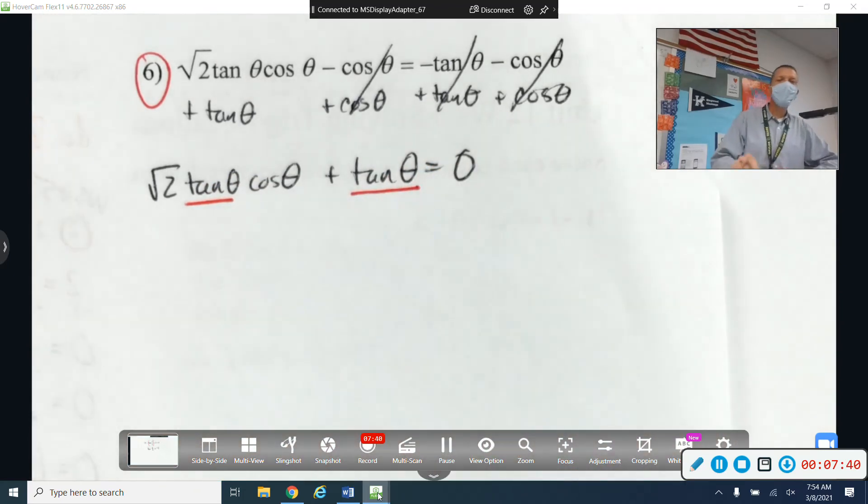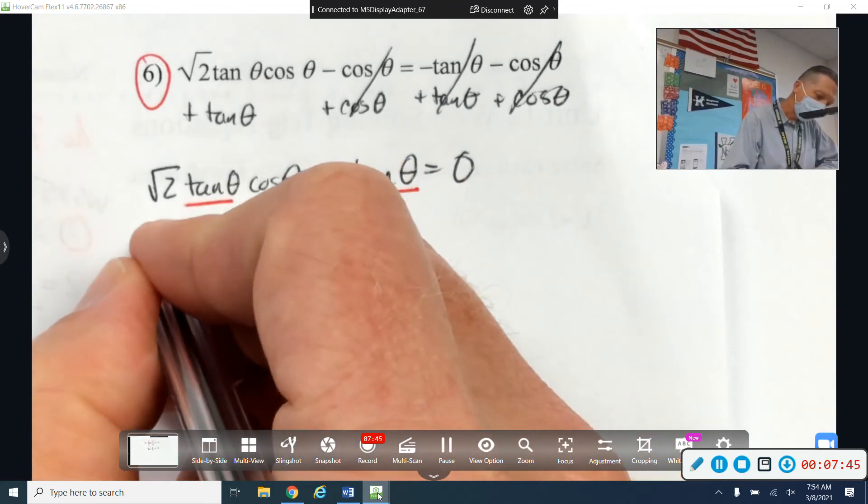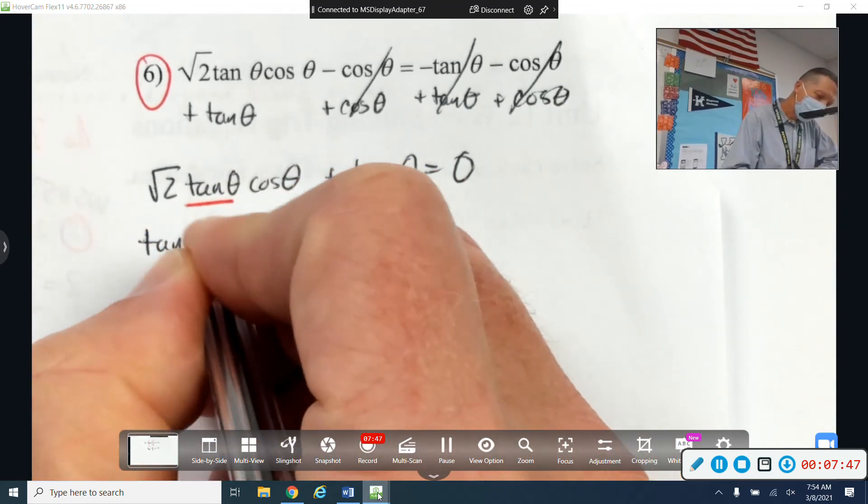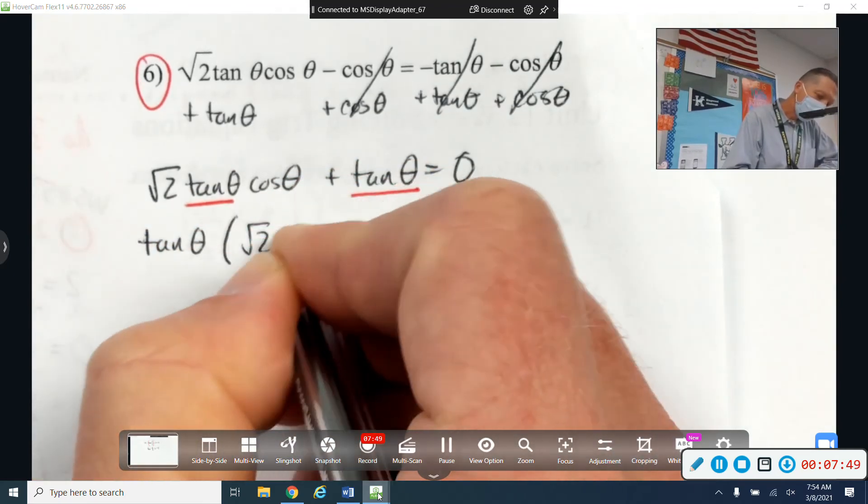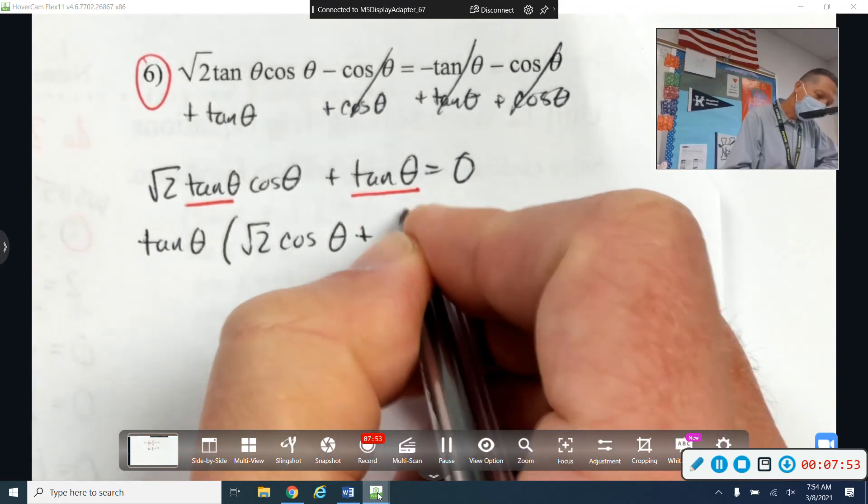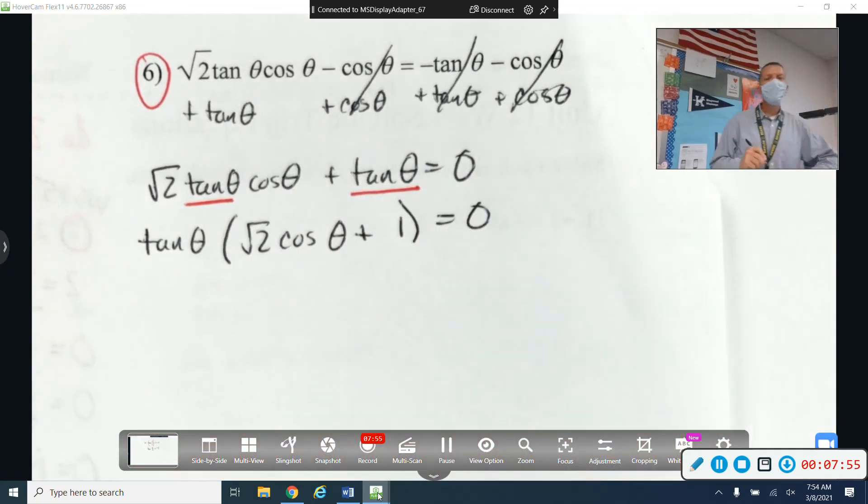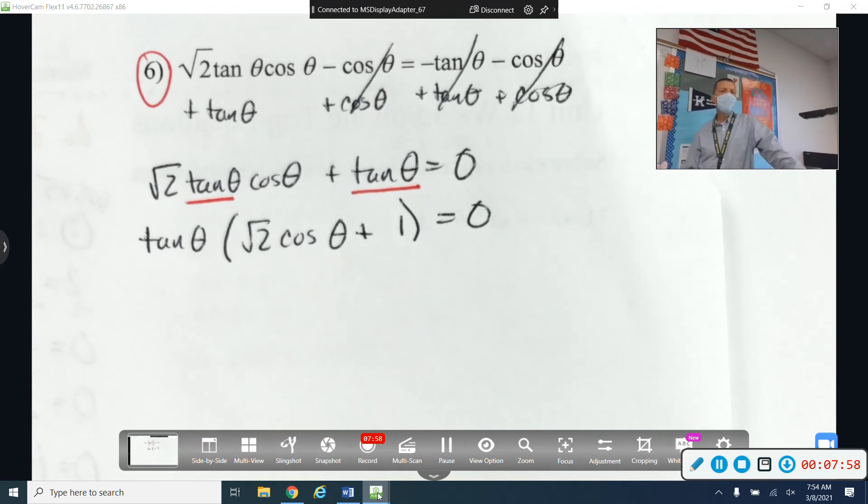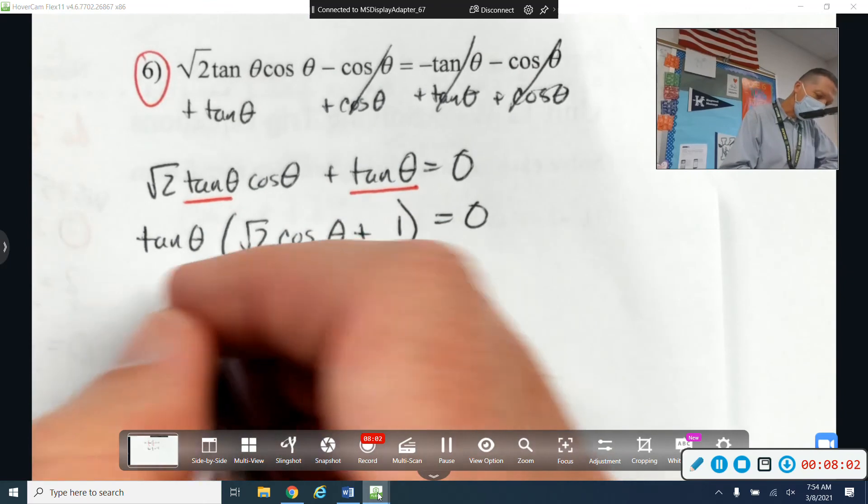What can I do to factor that? It's the old factoring that people sometimes forget. There's the greatest common factor that we can take out of there. So tangent theta times root 2 cosine theta plus 1 equals zero.